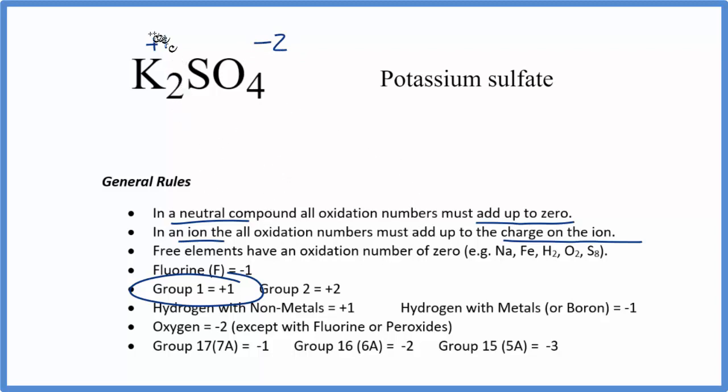This all makes sense because we have two times plus one, that gives us plus two. Then we have this minus two here. They all add up to zero because it's a neutral compound.